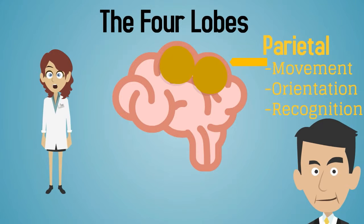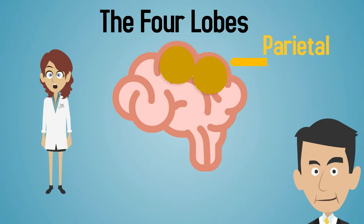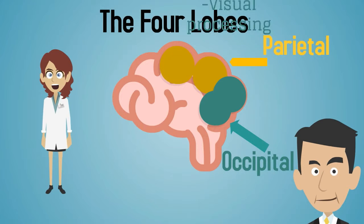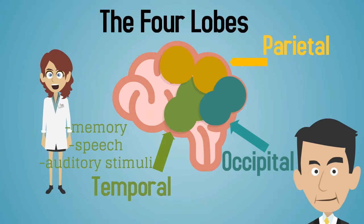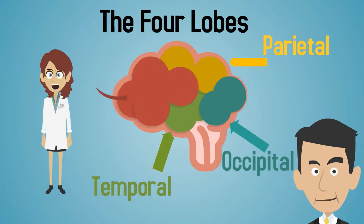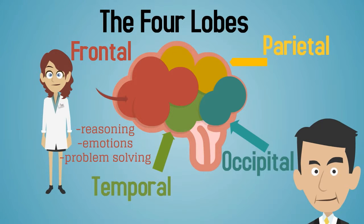One of these lobes is the parietal, which helps with movement, orientation, and recognition of stimuli. The occipital is responsible for visual processing. And the temporal is associated with memory, speech, and recognition of auditory stimuli. The frontal lobe is correlated with reasoning, emotions, and problem solving.